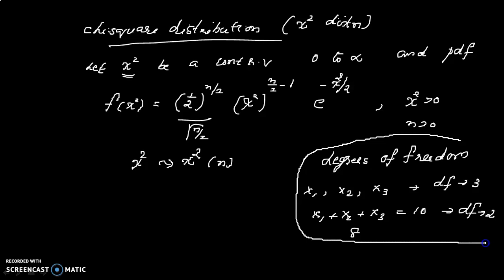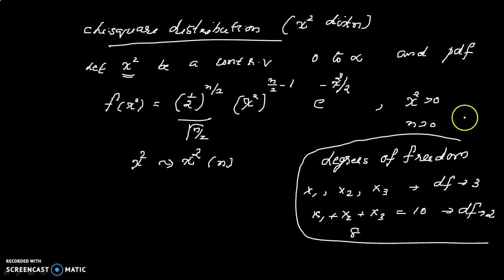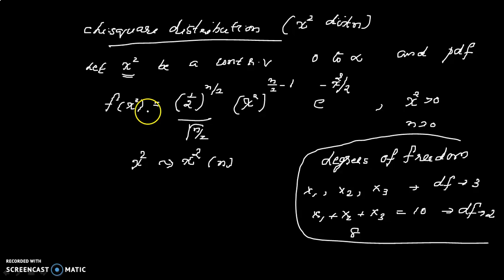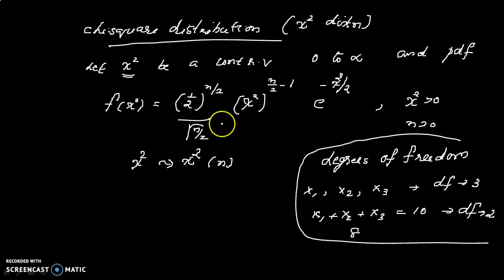We can use the term degrees of freedom. Now, for chi-square distribution, this is the PDF. The chi-square PDF follows the pattern of a gamma distribution. The gamma distribution PDF is f(x) = m raised to p divided by gamma(p), times x raised to (p−1), times e raised to minus mx.